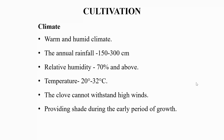Clove grows well under a warm and humid climate with annual rainfall ranging from 150 to 300 cm and relative humidity of 70 percent and above. It grows well in temperature ranges of 20 to 32 degrees centigrade. The clove plant cannot withstand high winds, so windy locations should be avoided, and providing 70 percent shade during the early growth period is necessary.